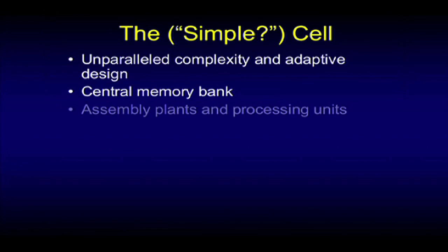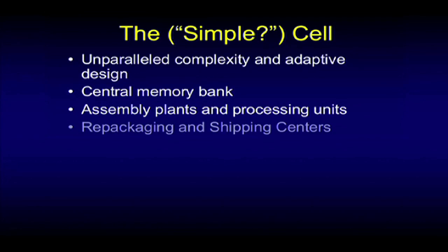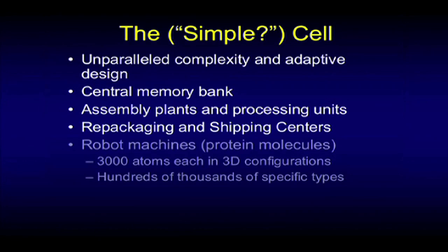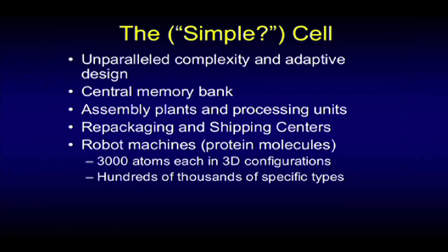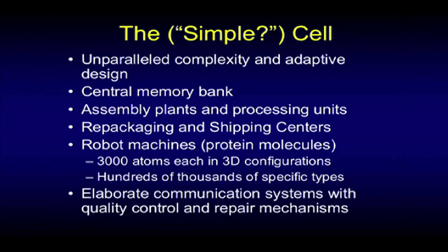It has a central memory bank, assembly plants and processing units, repackaging and shipping centers, robot machines — protein molecules that are robot machines — typically consisting of 3,000 atoms in three-dimensional configurations. It has hundreds of thousands of different specific types, elaborate communication systems, and quality control and repair mechanisms throughout.